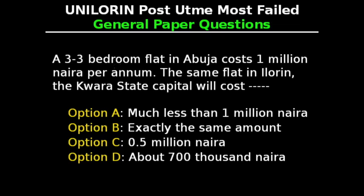General Paper Questions. This question says: A 3×3 bedroom flat in Abuja costs 1 million naira per annum. The same flat in Ilorin, the para-state capital, will cost — Option A: much less than 1 million naira, Option B: exactly the same amount, Option C: 0.5 million naira, Option D: about 700,000 naira. The correct answer is Option A, much less than 1 million naira.